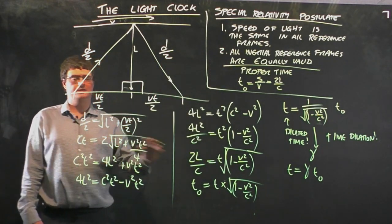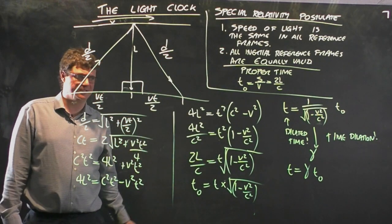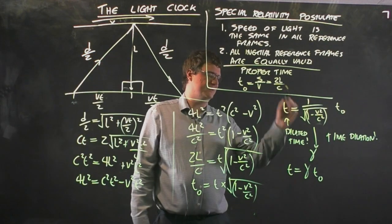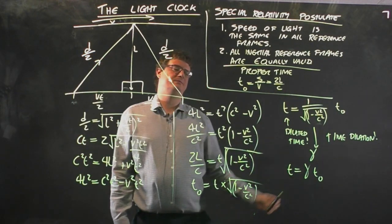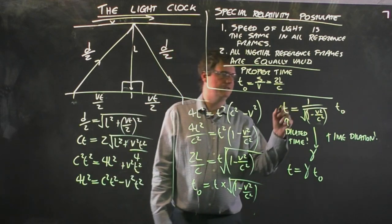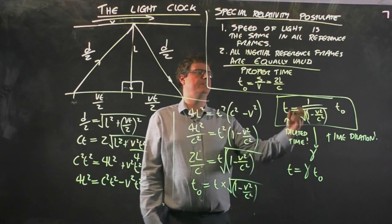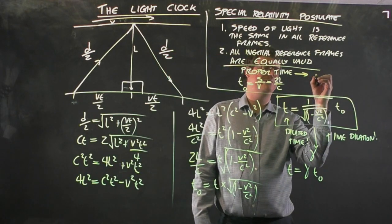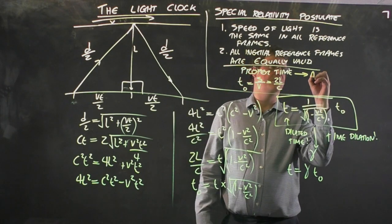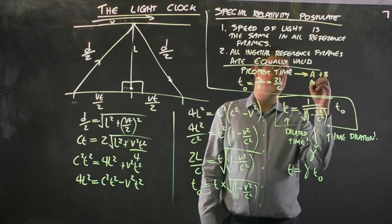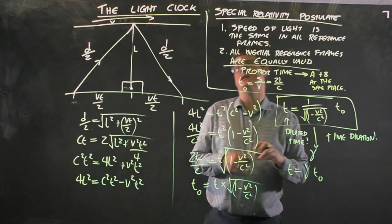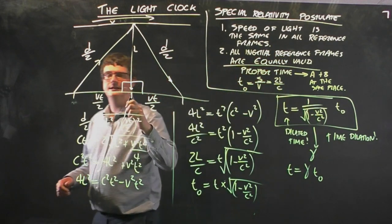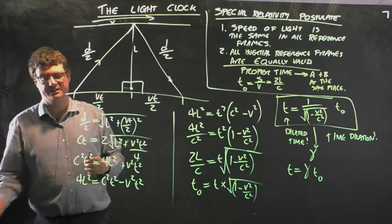This derivation is not accessible, it's not going to show up in the exam or the tests, but you need to be able to use this formula. So you don't have to be able to derive it, but you have to be able to use it. I really want you to remember proper time is observed by the reference frame where the events A and B happen at the same place. In this case, the events are the light leaving and coming back to the mirror.